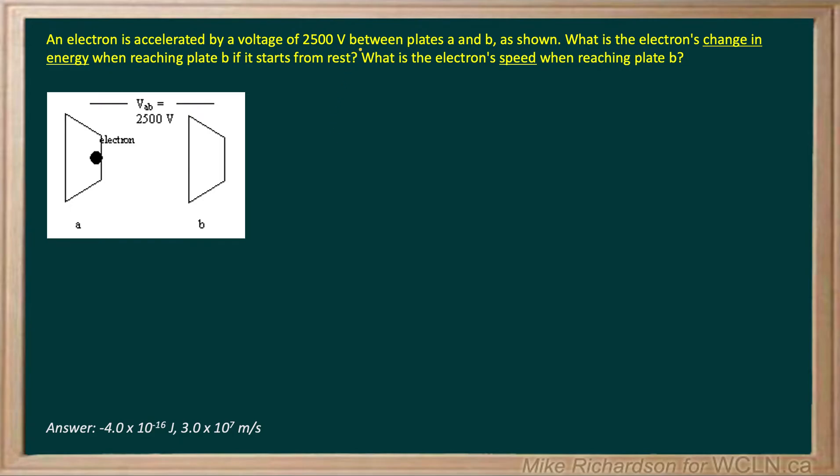An electron is accelerated by a voltage of 2,500 volts between plates A and B. We're assuming plate B is positive and plate A is negative because it's gaining voltage as it goes from A to B.